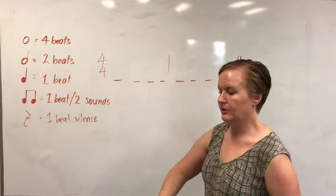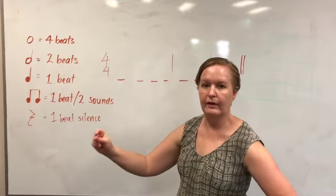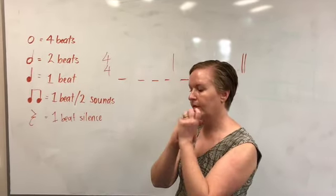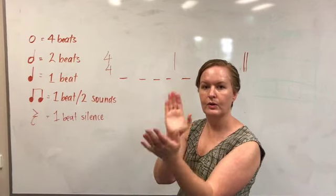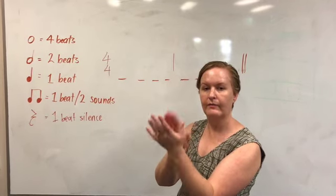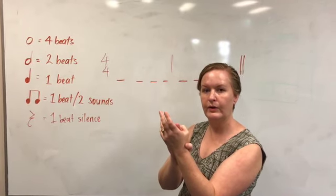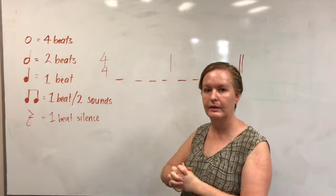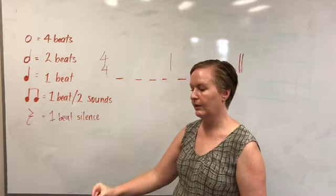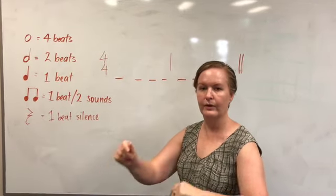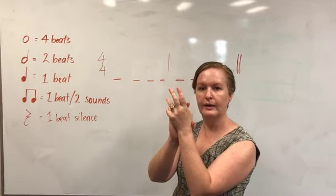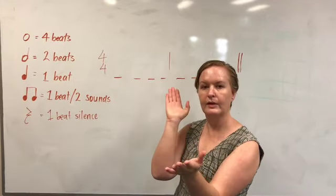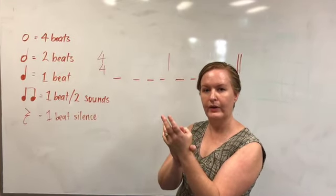Once you've heard what's going on in the first bar, write it down and try to ignore what's going on in the second bar — then we'll reverse it. Here we go: 1, 2, 3, 4. 1, 2, 3, 4. 1, 2, 3, 4. Let's do it again: 1, 2, 3, 4. 1, 2, 3, 4. 1, 2, 3, 4.